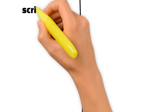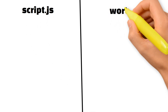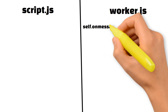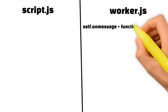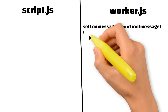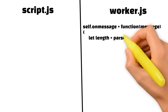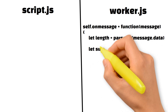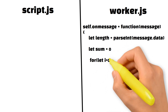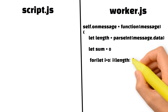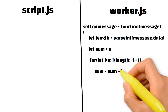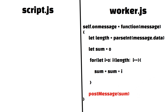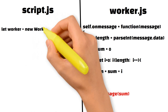Now let's compare script.js and worker.js side by side with a real-time scenario. Inside worker.js, we write self.onmessage. As a simple example: we get the value, convert it to an integer using parseInt, declare a sum variable initialized to zero, then run a for loop to calculate the sum of numbers up to that value.